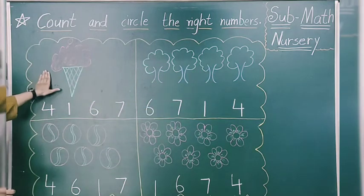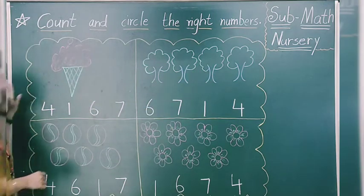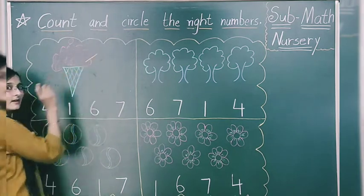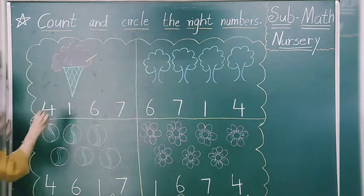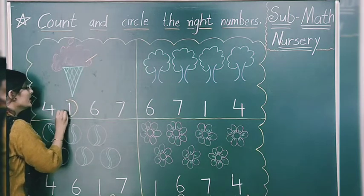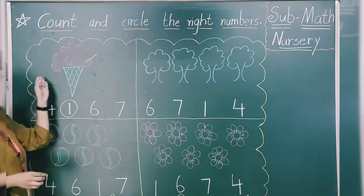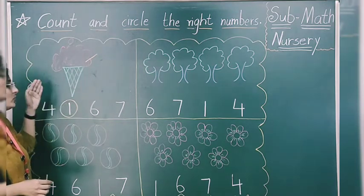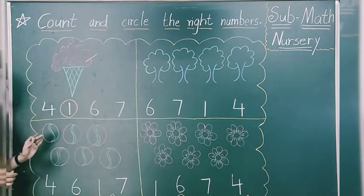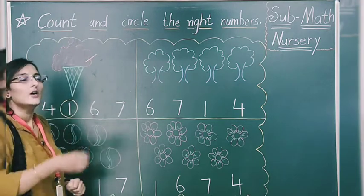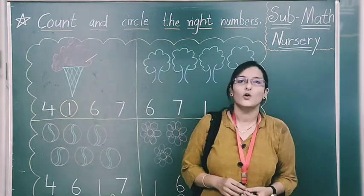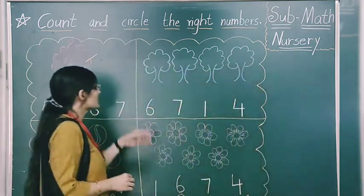Start doing with me. Count — how many? 1. So what we will do? We will circle number 1. After counting, we have to circle the correct number — on the right number. Moving to next.